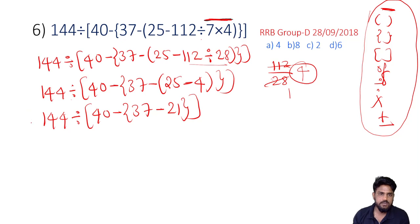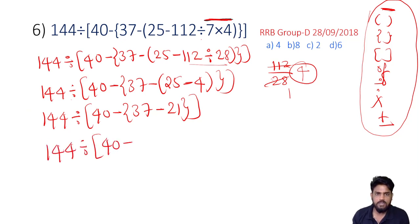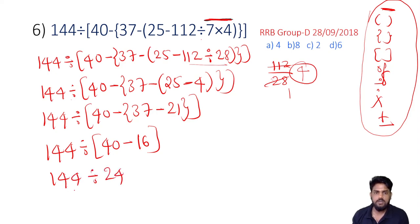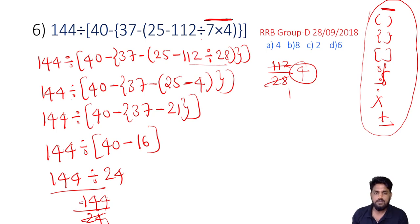Next time: 144 divided by 40 minus 16. 144 divided by 24. 144 divided by 24.